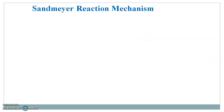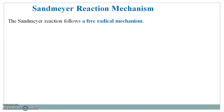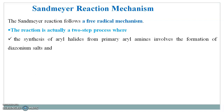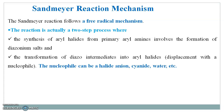Now we discuss the reaction mechanism. The Sandmeyer reaction follows a free radical mechanism. The reaction is actually a two-step process where the synthesis of aryl halides from primary aryl amines involves the formation of diazonium salts and the transformation of diazo intermediates into aryl halides — that is, displacement with a nucleophile. The nucleophile can be a halide ion, cyanide, water, etc.